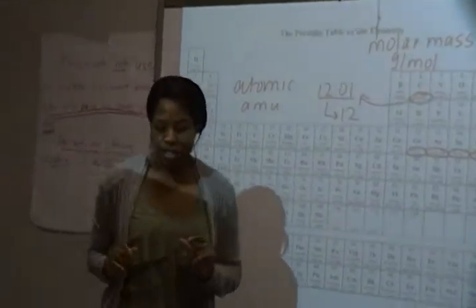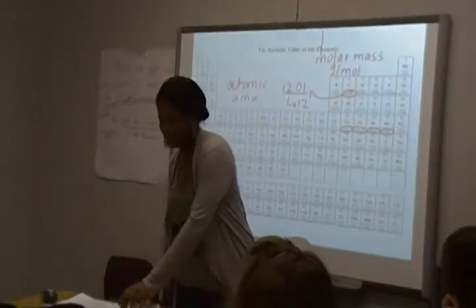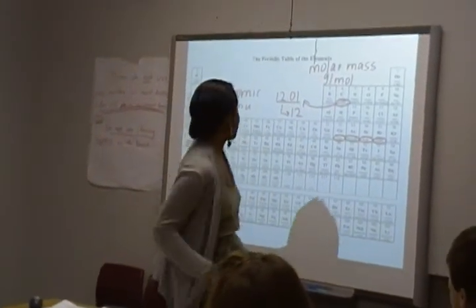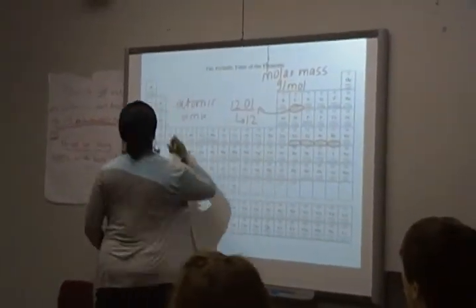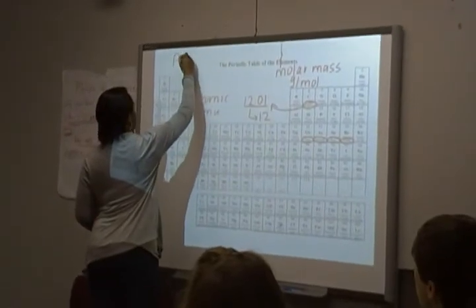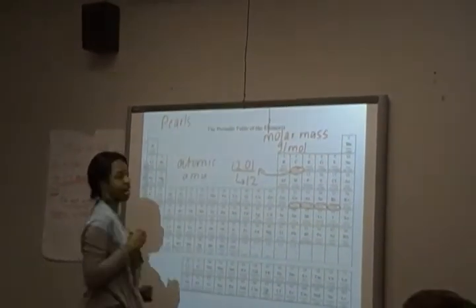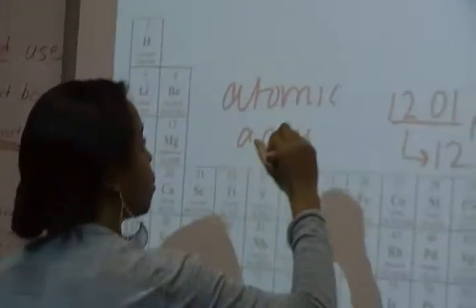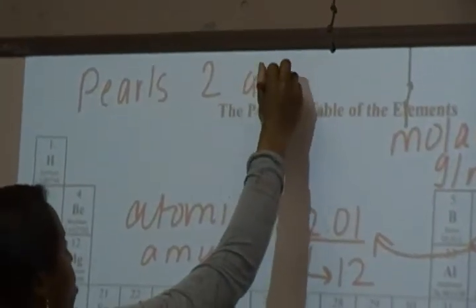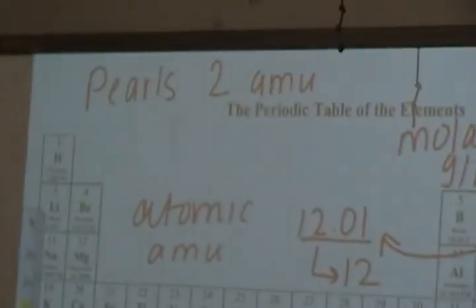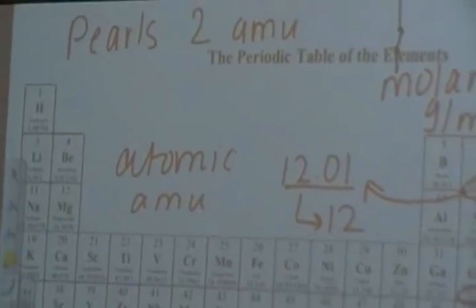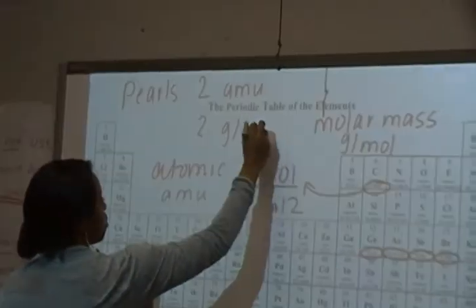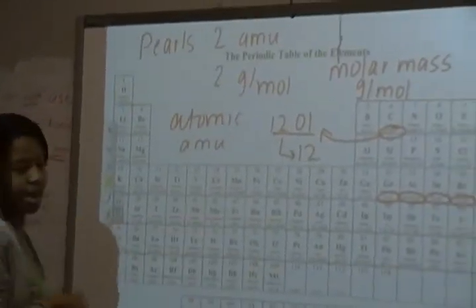We're going to do a quick demonstration to explain it a little bit better so you can conceptually understand it. Imagine that pearls was an element, and if pearls was an element, the atomic mass number for that would be 2. So if the atomic mass for pearls is 2 AMU, the molar mass for pearls would be 2 grams per mole, because it's the same numerical value as the atomic mass.